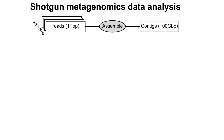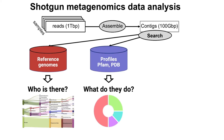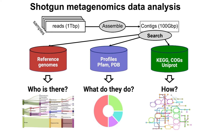Normally we answer those questions by searching against certain databases. For example, we can search against reference genomes, and that helps us determine who is in the community — what kind of species are actually there. We can search with profiles against structural or domain databases to figure out what these proteins actually do and what functionality these microbes have.